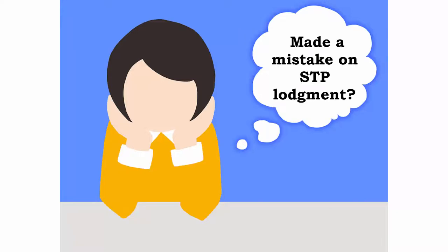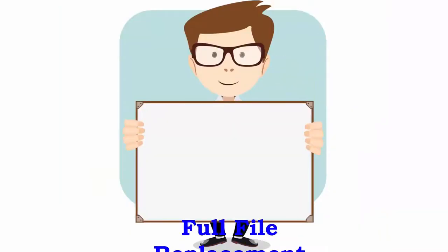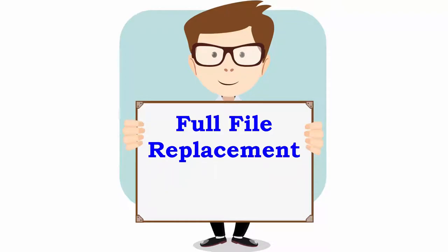If you have found a mistake in your STP Lodgement, you can correct it and relodge it using Pull File Replacement. Pull File Replacement will entirely replace the Lodgement made to the ATO with the latest updated Lodgement.